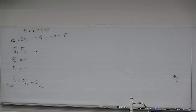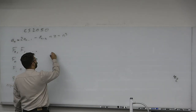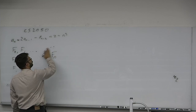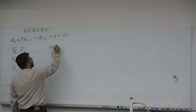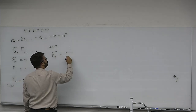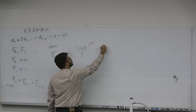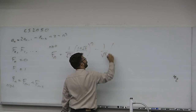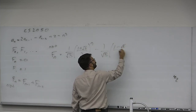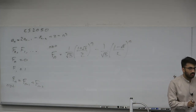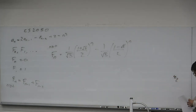Would you believe me if I told you that Fibonacci has a closed form? The closed form of the Fibonacci sequence, for all n ≥ 0, is that the nth Fibonacci number is exactly (1/√5) × ((1 + √5)/2)^n minus (1/√5) × ((1 − √5)/2)^n. That is an ugly, big, long formula, but we're going to be able to prove by induction that it's correct.